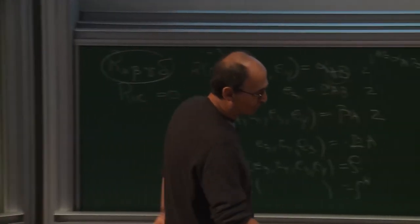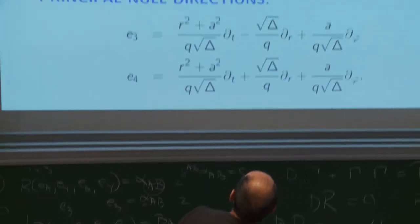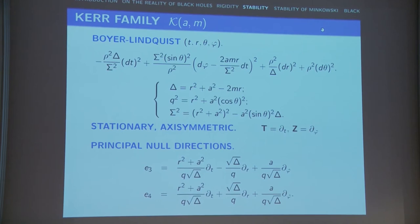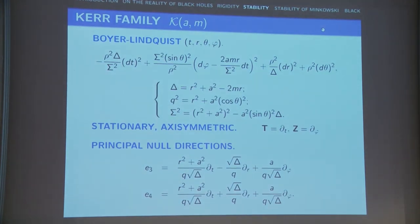Now I return to the Kerr family. In Boyer-Lindquist coordinates, there are explicit vectors e3 and e4 which are null, called principal null directions.